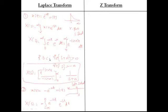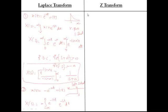Whenever you determine the region of convergence, you check whether the signal is absolutely integrable. Accordingly, you frame the region of convergence. A similar example can be done for Z-transform.